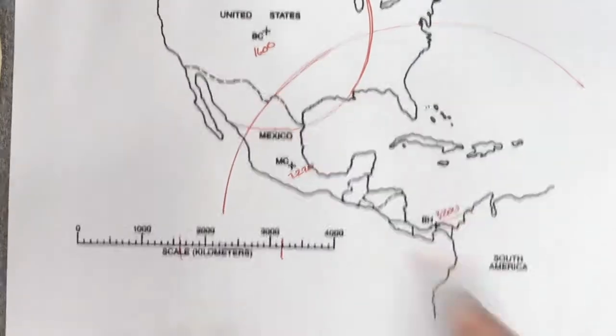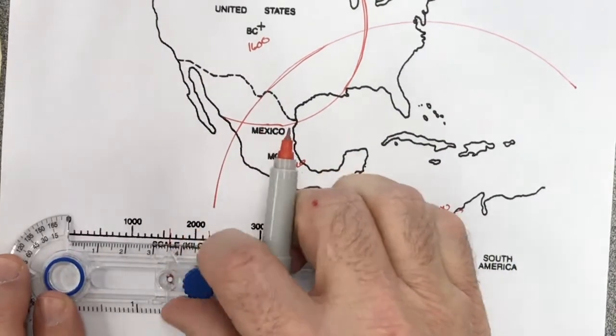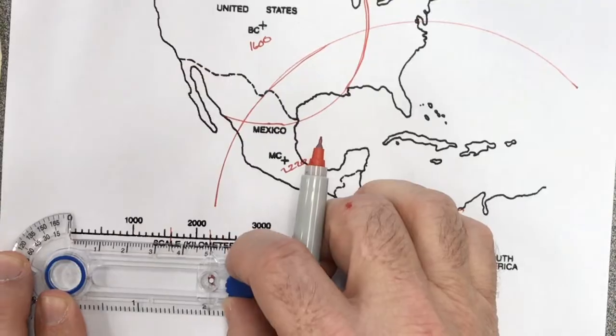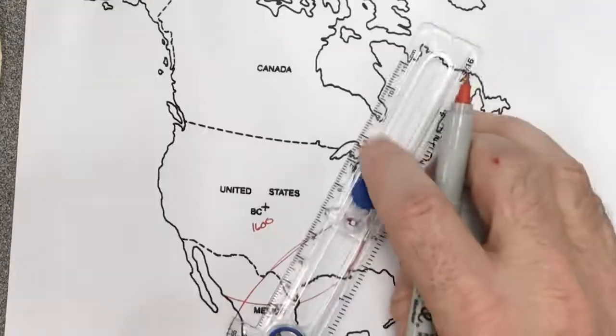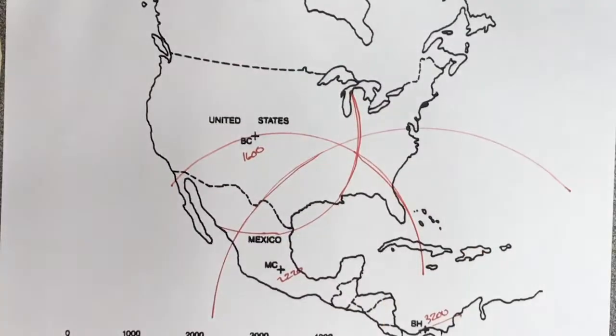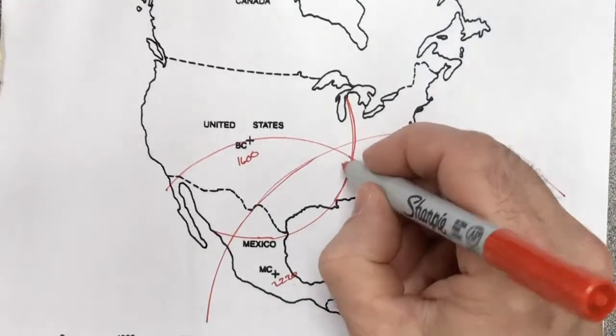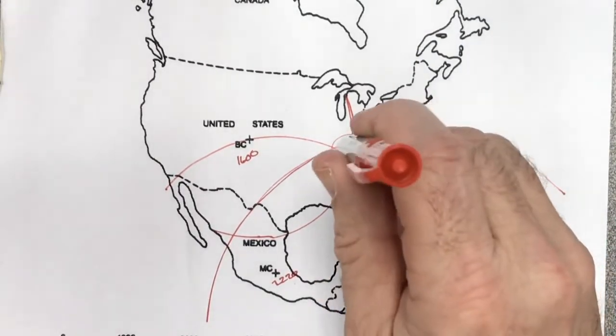And then I'm going to do Mexico City, 2,200. Right there. And I'm going to line that up on Mexico City. And do the arc. There we go. Now, do you notice where they all come together? They've all come together here. It's not quite perfect, but it's pretty close. Where's the epicenter of this earthquake? It's where all three of them come together.